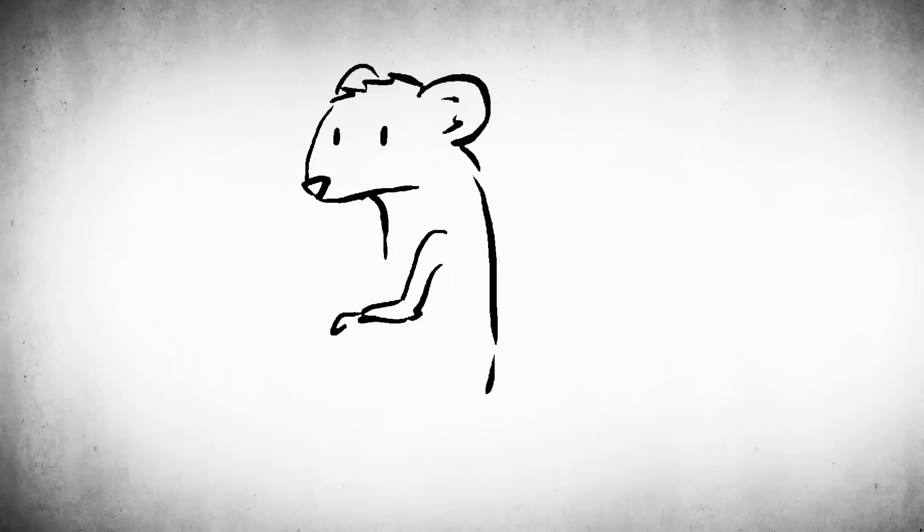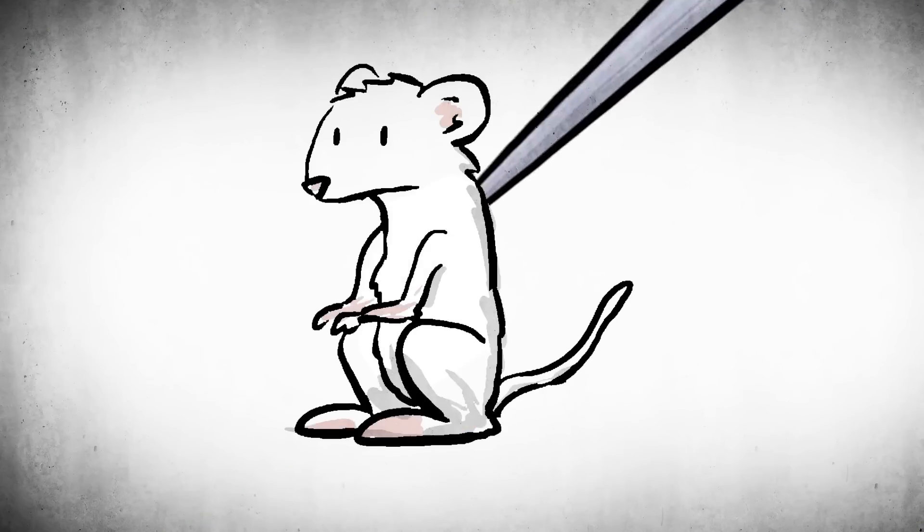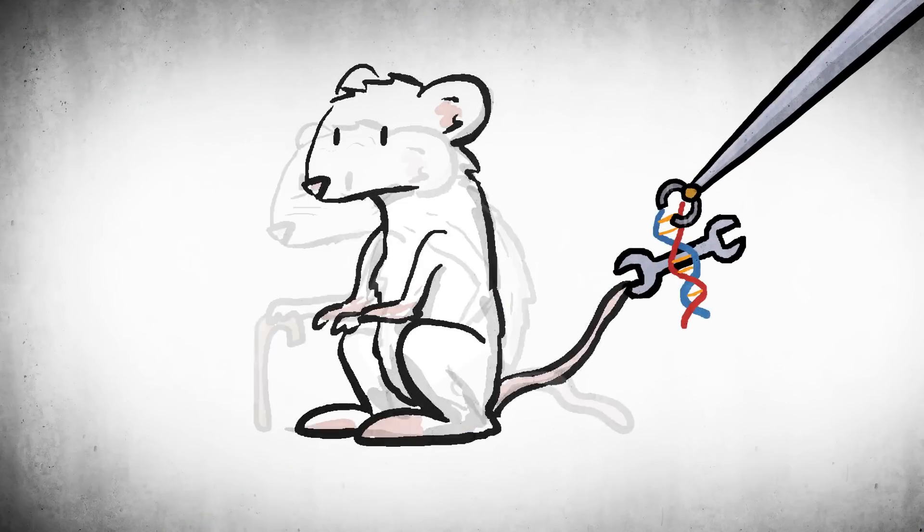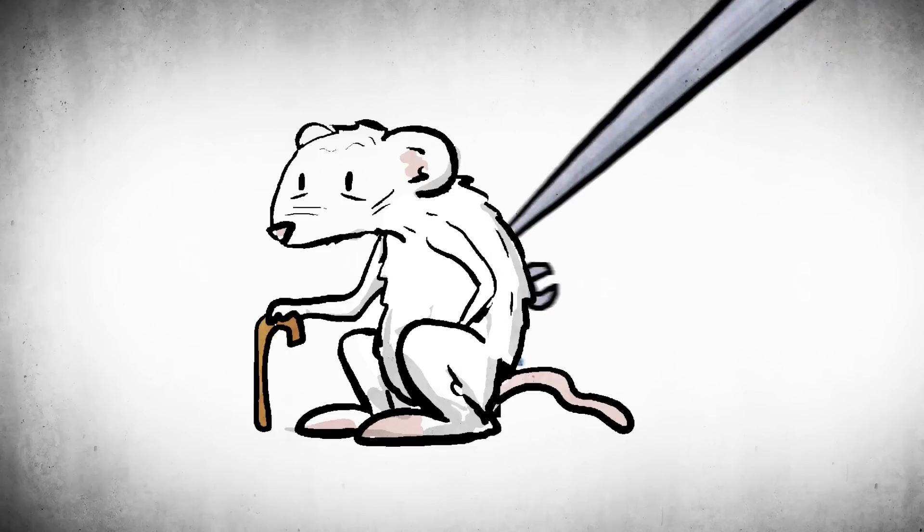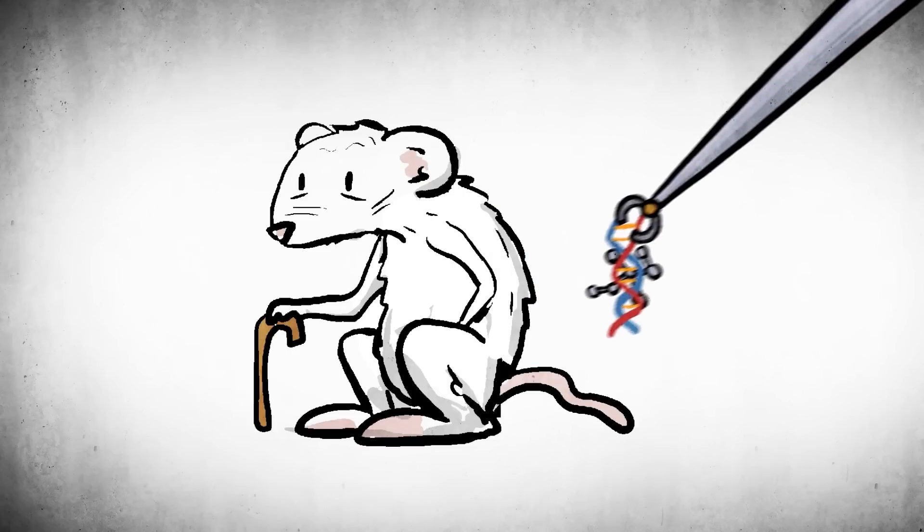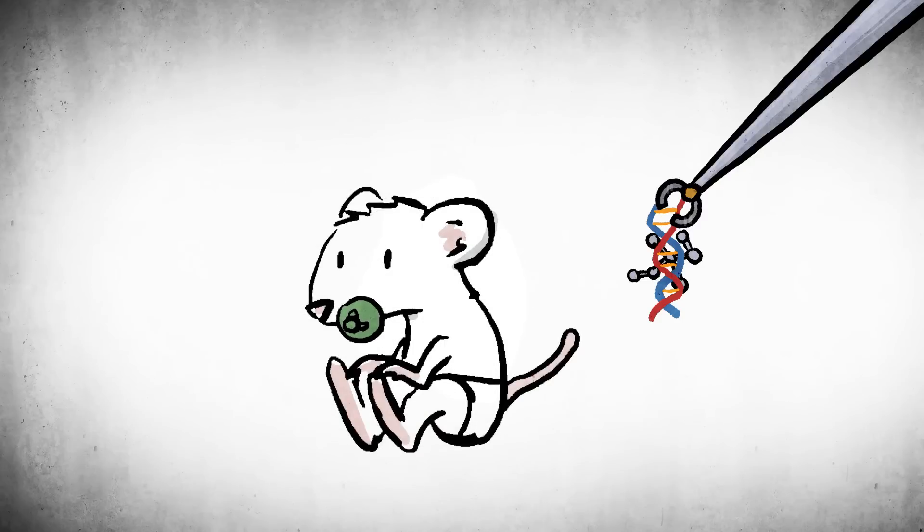We know, for instance, that if you start manipulating DNA repair systems, sometimes, for example in mice, you get what looks like accelerated aging. On the other hand, you can turn off a single gene in mice, like growth hormone receptor, and increase lifespan by 50%.